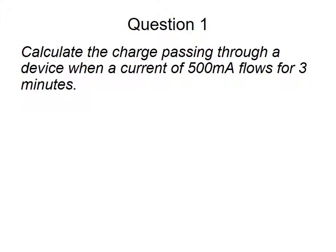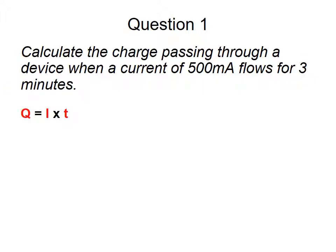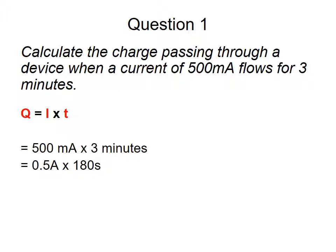Using that equation, calculate the charge passing through a device when a current of 500 milliamps flows for three minutes. Pause the video now. The important aspects are the conversions: three minutes converted to 180 seconds and 500 milliamps converted to 0.5 amps. Using Q = It, that's 0.5 amps × 180 seconds, giving a charge of 90 coulombs.